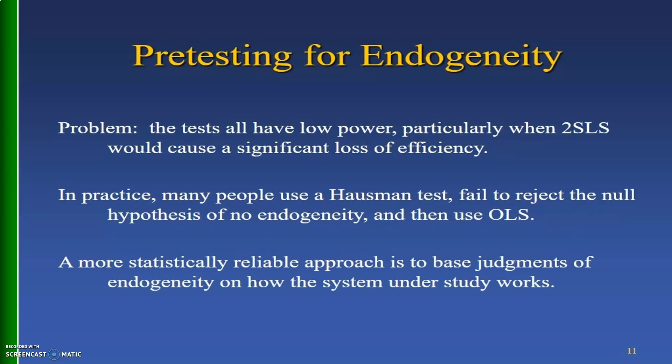There are some problems: all these tests have low power, particularly when 2SLS would cause a significant loss of efficiency. Practically, many people use the Hausman test, fail to reject the null hypothesis of no endogeneity, and then use OLS. A more statistically reliable approach is to base judgments of endogeneity on how the system under study actually works.